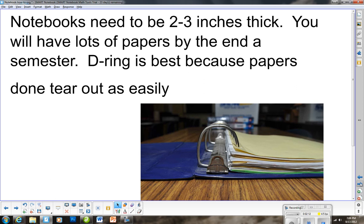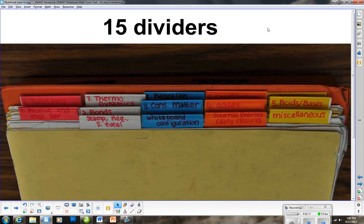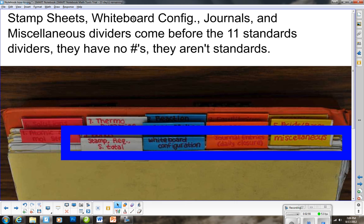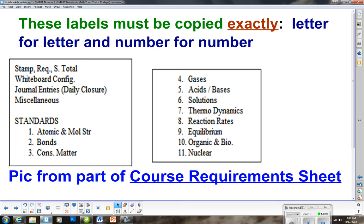You're going to need 15 dividers, and here's what they look like when the notebook is totally completed. Those 15 dividers are in two groups. The first group is standards. California State has 11 standards that we have to teach as part of this course. The notebook filing system that I've created is very much geared to that.